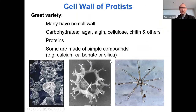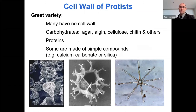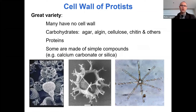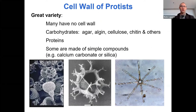What about protists? Protists are that catch-all group — eukaryotes that aren't plants, fungi, or animals. There's a huge variety: many don't have cell walls. Some have cellulose and chitin. Then there's a bunch of other weird carbohydrates. Some don't even have carbohydrates — they're using proteins. Some are made out of minerals like calcium carbonate and silica. There are lots of weird things going on with protists because they're such a huge diverse group.